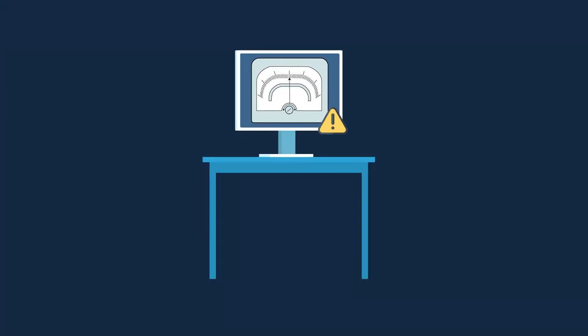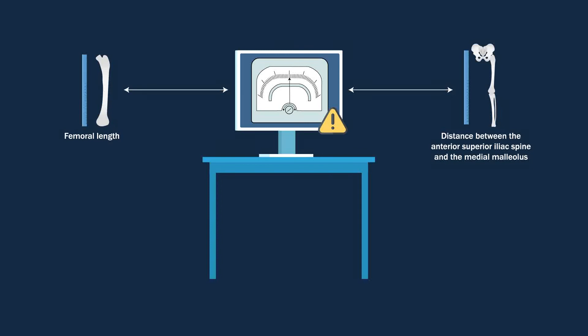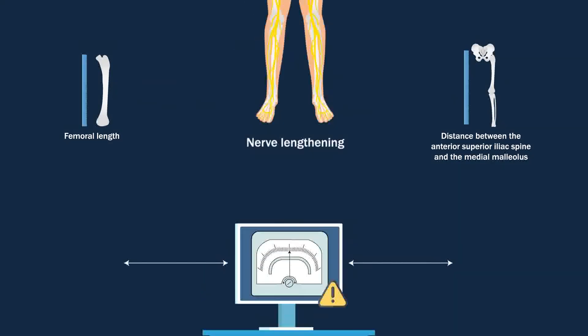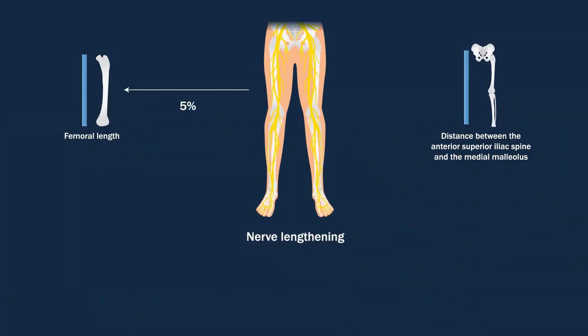In addition, statistical analysis revealed that the critical limit of lengthening was significantly correlated with femoral length and the distance between the anterior superior iliac spine and the medial malleolus. Nerve lengthening of 5% relative to femoral length and 2.6% relative to the distance between the anterior superior iliac spine and the medial malleolus were found to be critical.